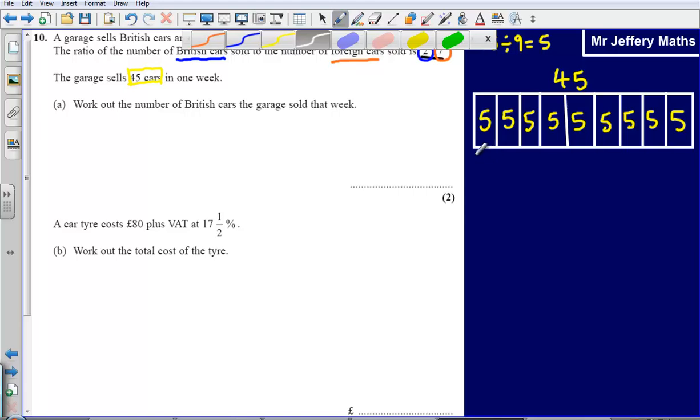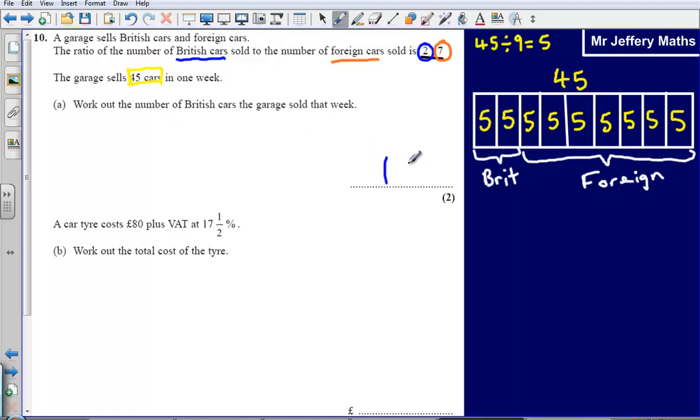So what I can then see is that 2 parts of this bar, they're going to be British cars. And then the other 7 parts, they are all going to be foreign cars. So what I can see then is that well I've got 2 parts that are British, so in total I've got 10 British cars and I've got 35 foreign cars. We're asked for the number of British cars so it will be 10 British cars.